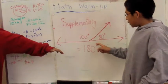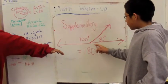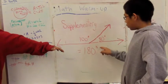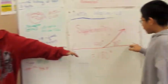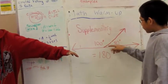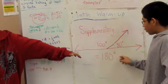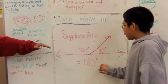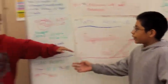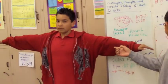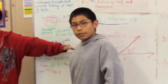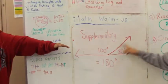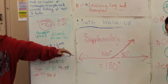Supplementary degrees — supplementary is two angles that make up 180 degrees. If you were to erase this line, it would just be the straight angle. As long as you add them together, they make up 180 degrees, like right here. He's making the supplementary angles because it's straight. If you were to erase this line, it would only be a straight angle.